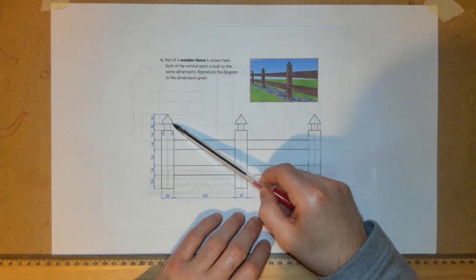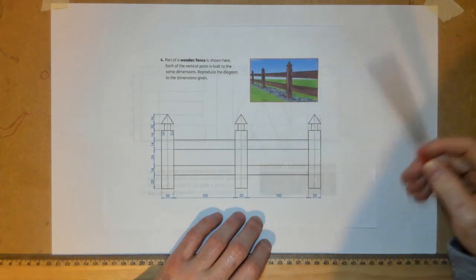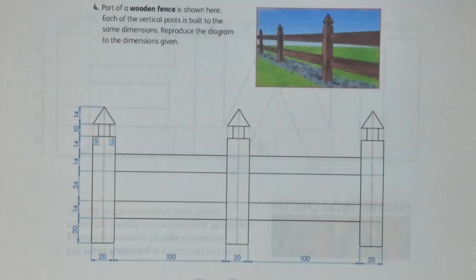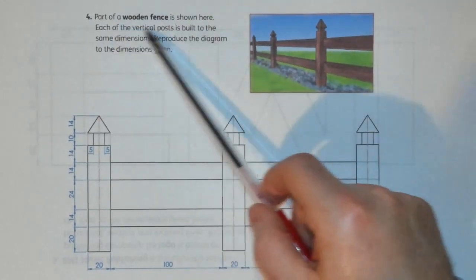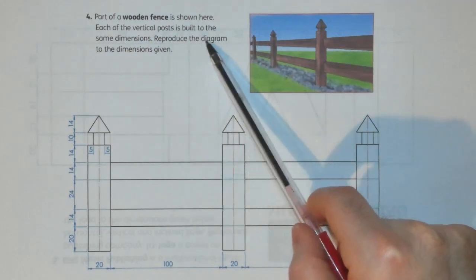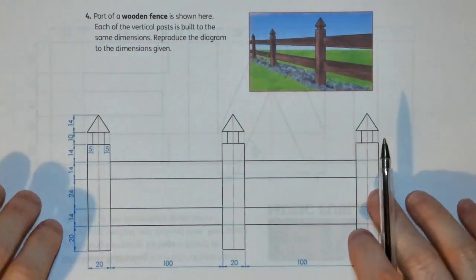As we can see here, some of the angled lines in this one are actually on the top of the wooden fence posts. Just zooming in the drawing there so we can see it a little bit clearer. It says here: part of the wooden fence is shown here, each of the vertical posts built to the same dimensions, reproduce the diagram to the given dimensions. We can see we've got three posts going from left to right, one, two, three.